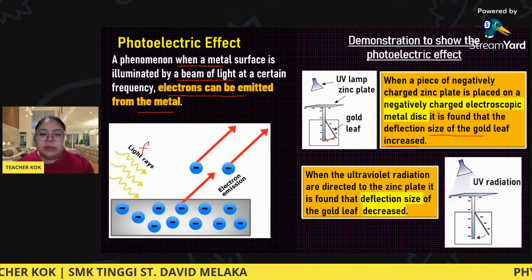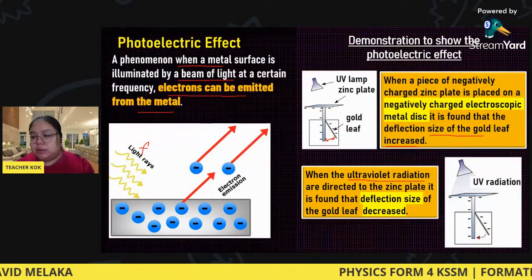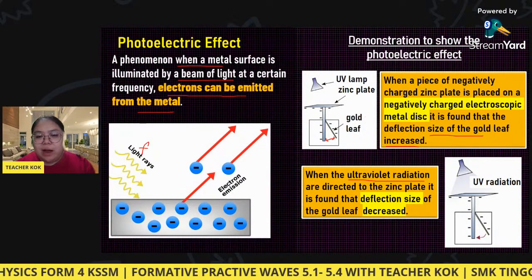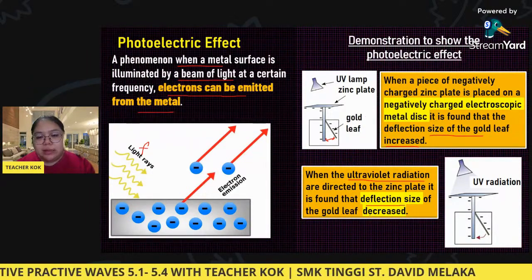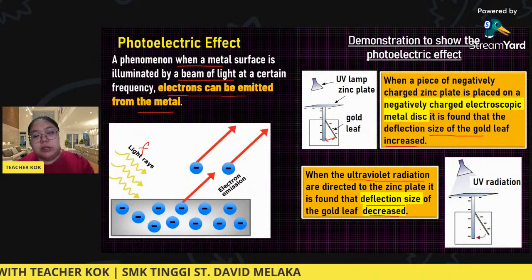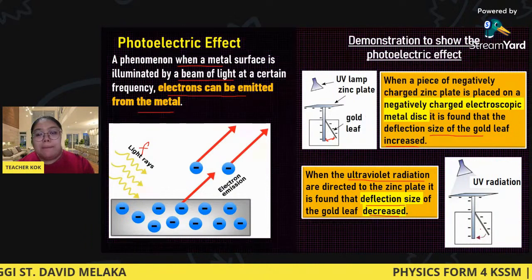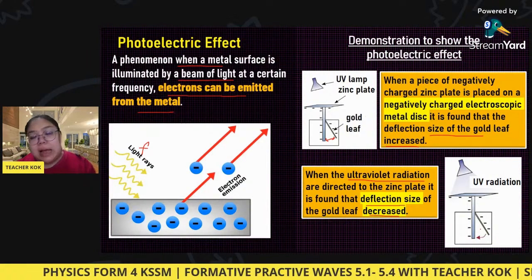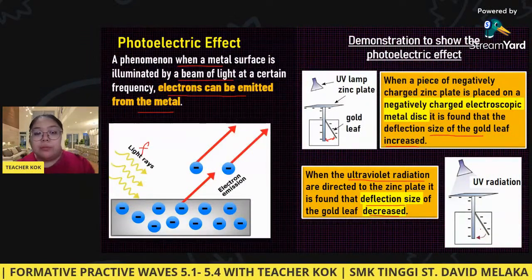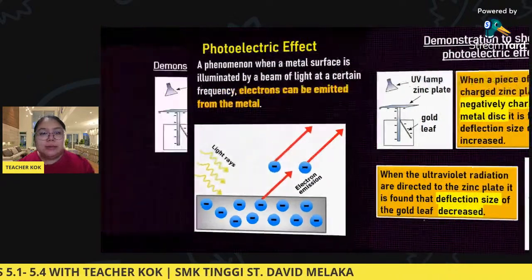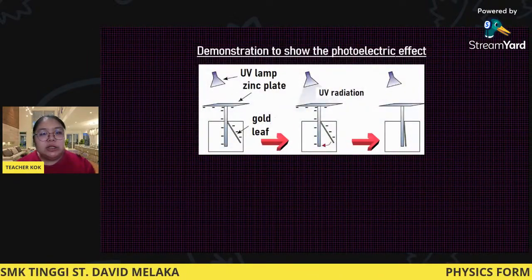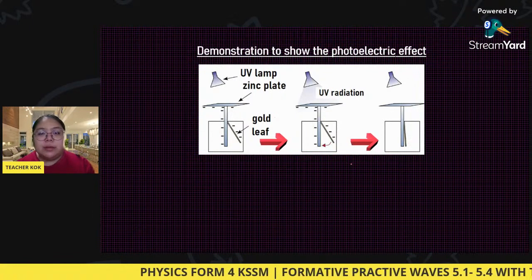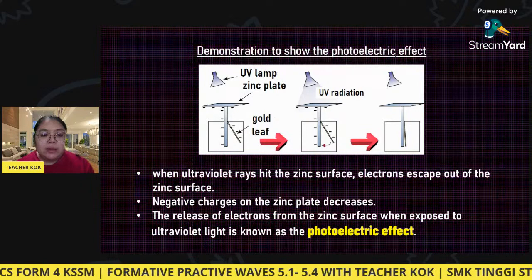When using ultraviolet radiation, the zinc plate is found to cause the deflection size of the gold leaf to decrease — the gold leaf slowly comes down. This could mean it got protons and became neutralized, or the electrons became fewer, so it also drops. You can see in the diagram: no UV, then with UV, and finally the gold leaf drops.